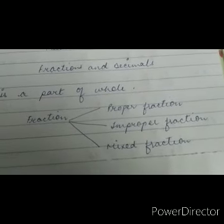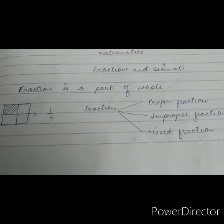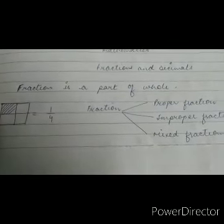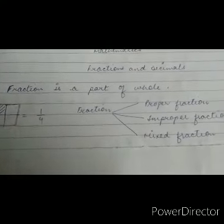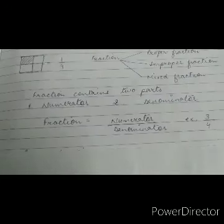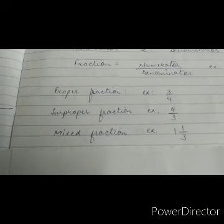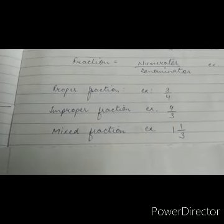Fractions are of three types: proper fraction, improper fraction, and mixed fraction. A fraction contains two parts — numerator and denominator — and is written as numerator upon denominator. For example, three upon four, where three is the numerator and four is the denominator.